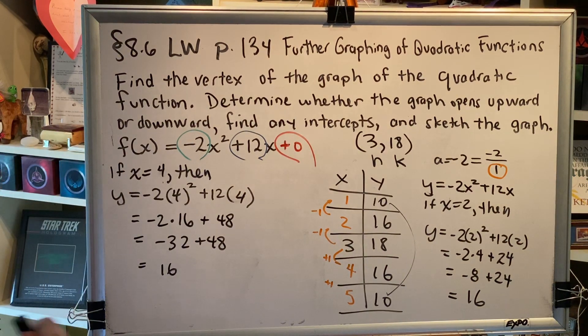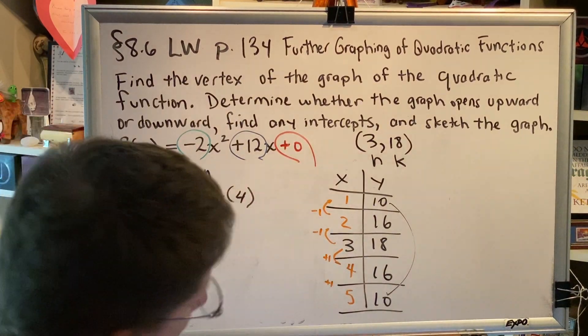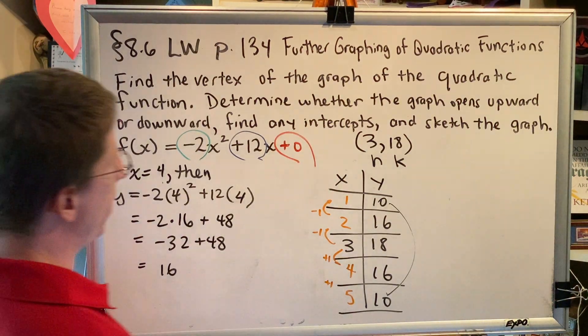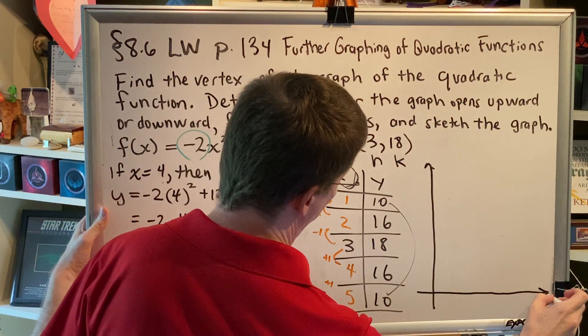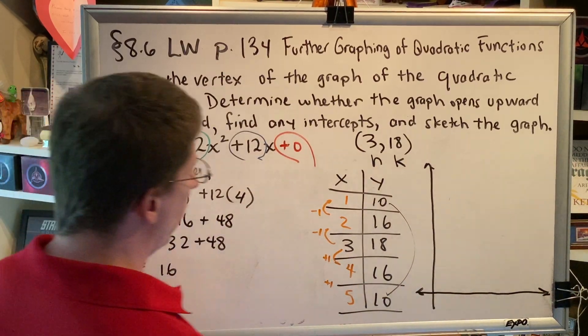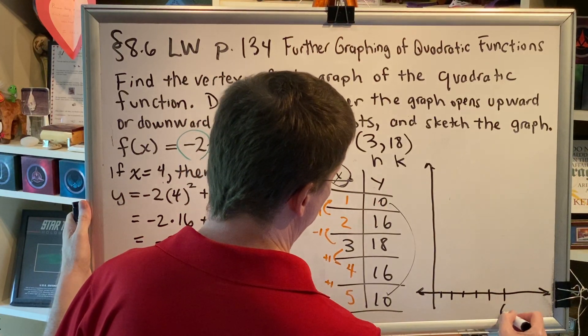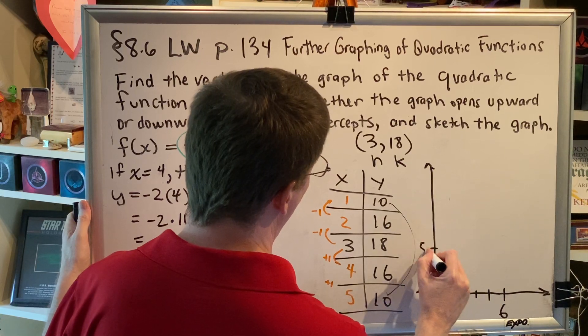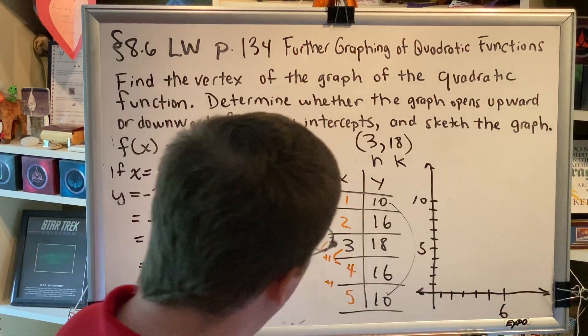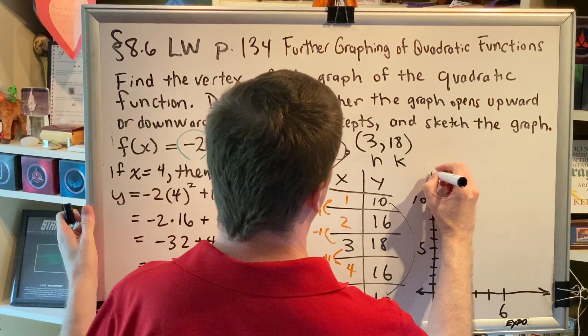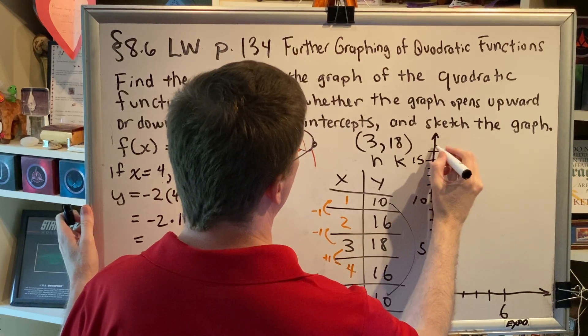I'd like you to notice that there are no negatives anywhere in this chart, which means our graph will be entirely in quadrant 1. Here we go. 1, 2, 3, 4, 5, 6. 1, 2, 3, 4, 5, 6, 7, 8, 9, 10. I need to go a little higher here. 11, 12, 13, 14, 15, 16, 17, 18.